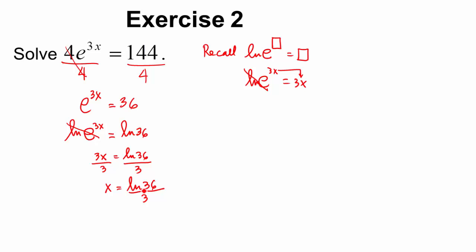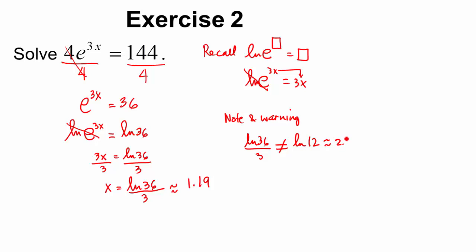The approximate value is 1.19. Warning: the natural log of 36 divided by 3 is not equal to the natural log of 12. The natural log of 12 is approximately 2.48 — they're not the same. You cannot cancel 36 over 3, because the natural log of 36 is a single term — it's not 'natural log times 36.' This is already the final exact answer; don't simplify it further.